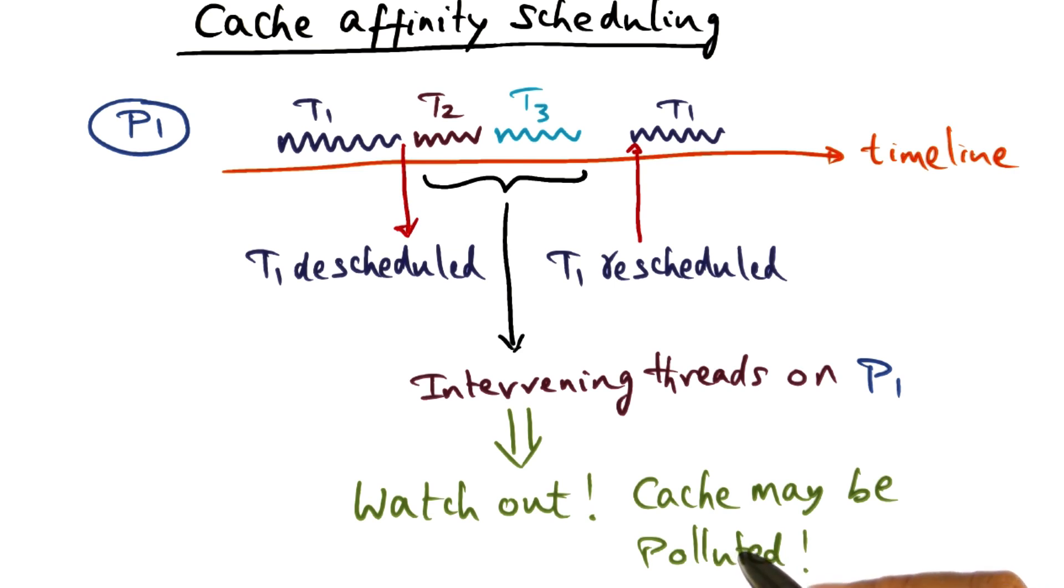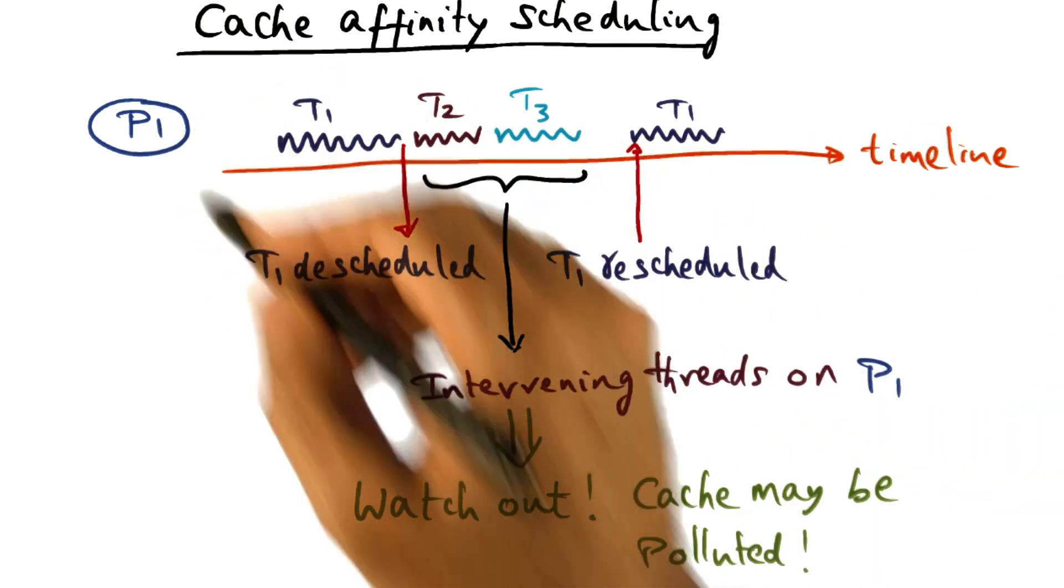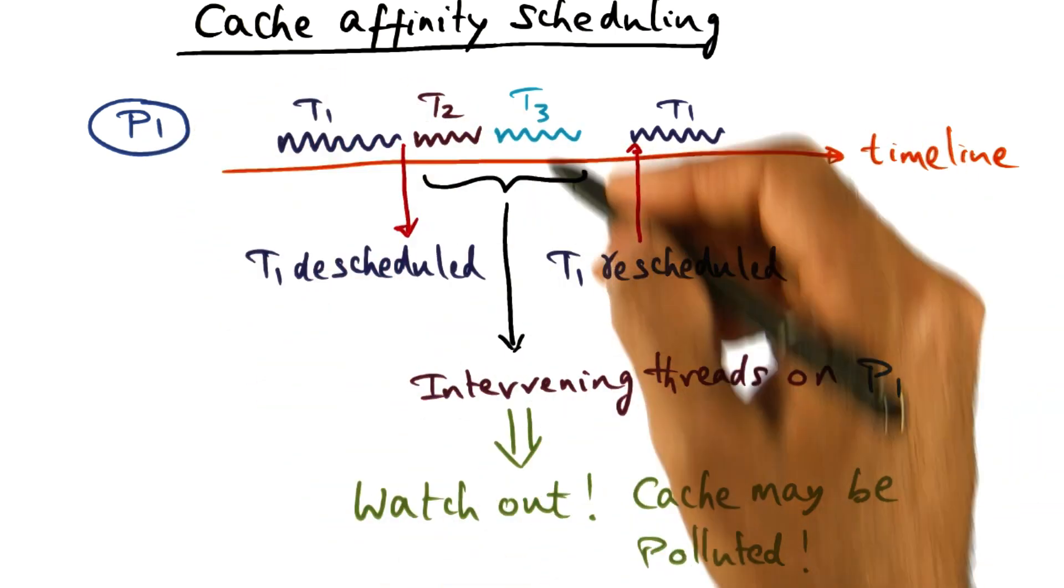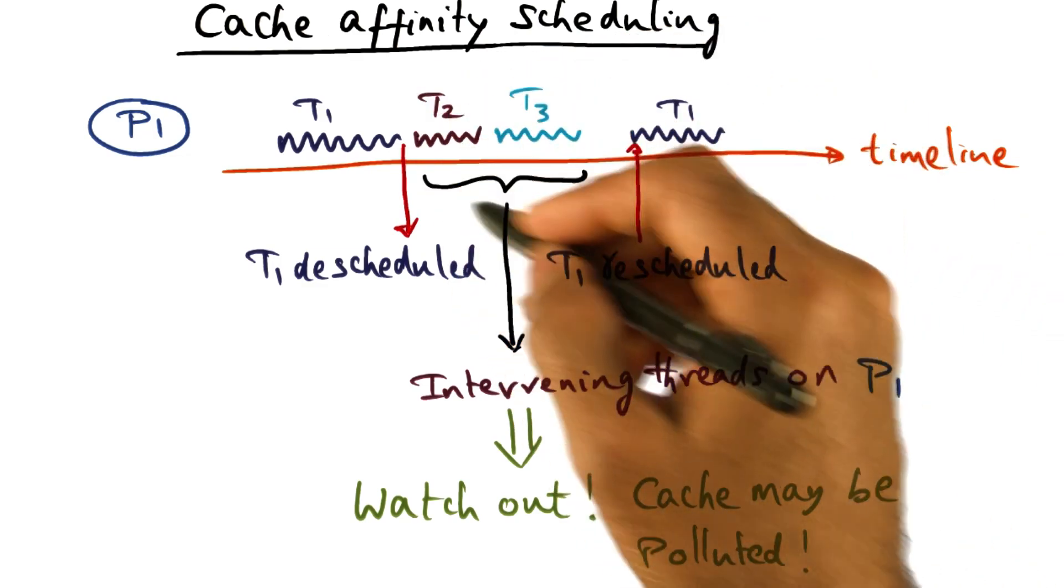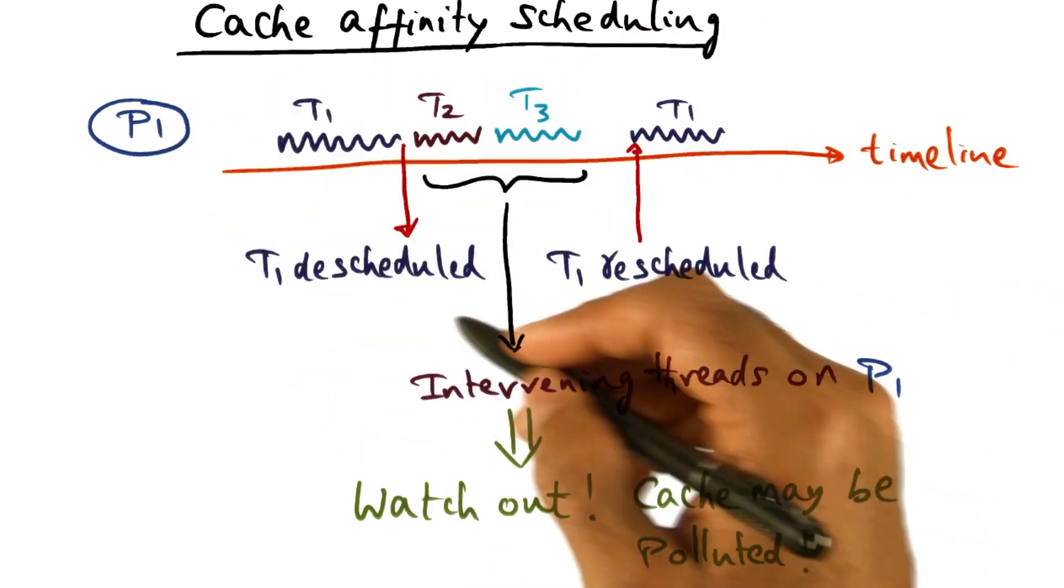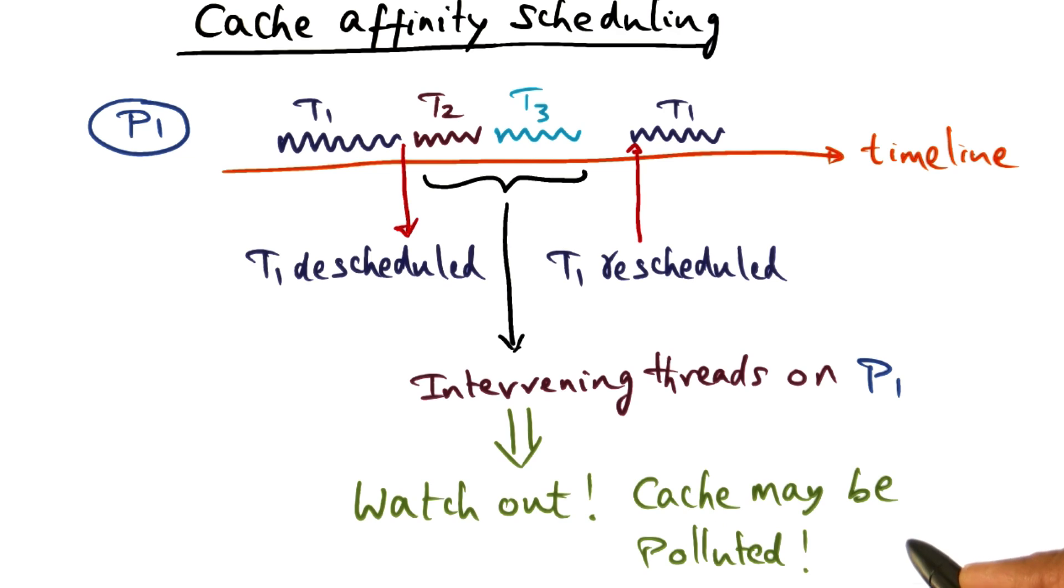So the moral of the story is that you want to exploit cache affinity in scheduling threads on processors, but also you have to be worried about any intervening threads that may have run on the same processor and may have polluted the cache as a result.